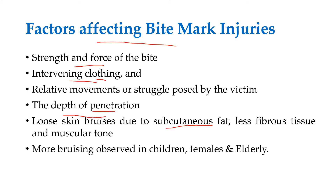Loose skin bruises due to subcutaneous fat are observed when the person has more subcutaneous fat, less fibrous tissue, and less muscular tone. A greater bruising effect is observed in children, females, and elderly persons. Children have more subcutaneous fat, females have more sensitive skin, and elderly people have less fibrous tissue, less muscular tone, and an optimal amount of subcutaneous fat.